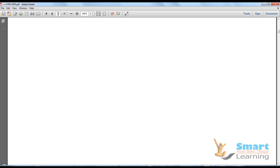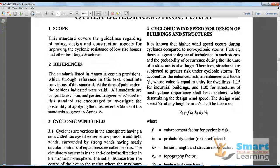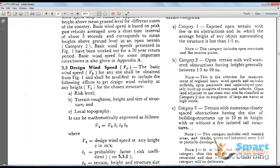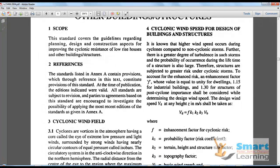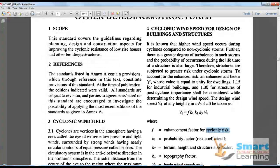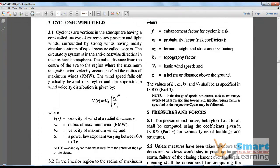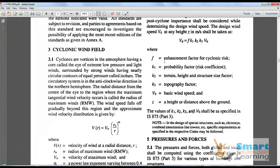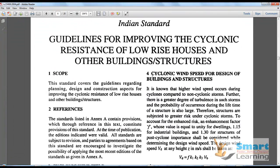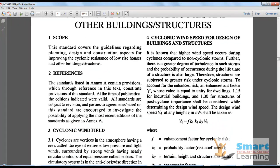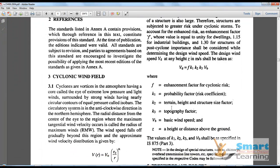In IS 15498 on page 6, you can see the same formula VD = F × K1 × K2 × K3 × VB, whereas in the IS standard you can see only F is missing. In this particular standard, F is the enhancement factor for cyclonic risk. This code references IS 875 Part 3 where the values of K1, K3, and VB shall be specified. Only in cyclone prone areas where you have cyclones, you have to consider this factor F for wind load analysis.